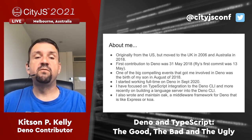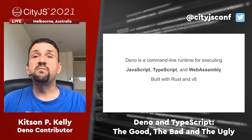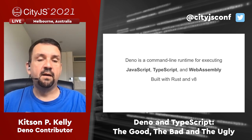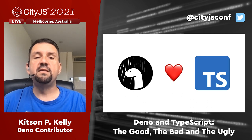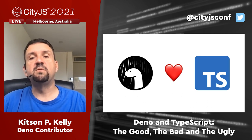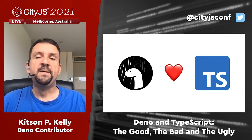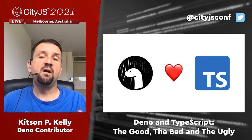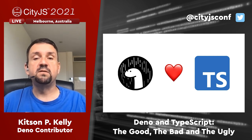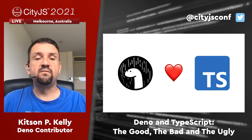I also wrote and maintain Oak, a middleware framework for Deno that is sort of Express or Koa-like. For those not familiar, Deno is a command-line runtime for executing JavaScript, TypeScript, and WebAssembly. It's built with Rust and V8. Ever since the beginning, Deno has embraced TypeScript, and one of our main objectives has been to treat TypeScript as a first-class language — just like JavaScript and WebAssembly. That means there's nothing to install or configure to run TypeScript, and your TypeScript will be type-checked against Deno-specific and supported web platform APIs.